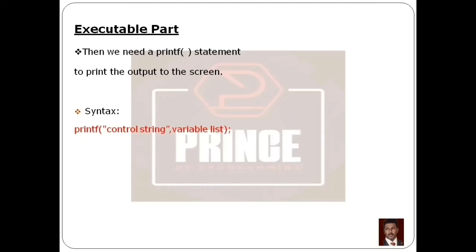For the printf output statement: printf with open parenthesis, double quotes, the text 'Entered number is', then the format specifier %d for integer to display the value, then close double quotes, then comma, then variable name A, then close parentheses, then semicolon.